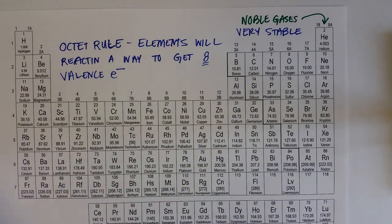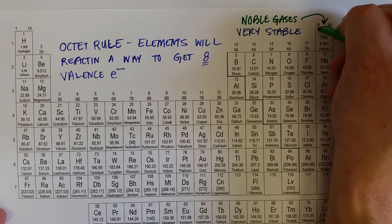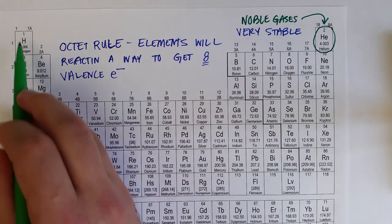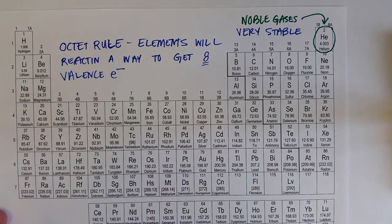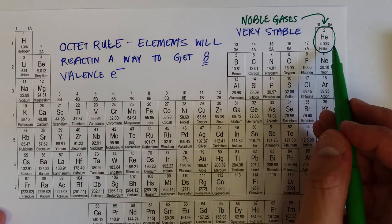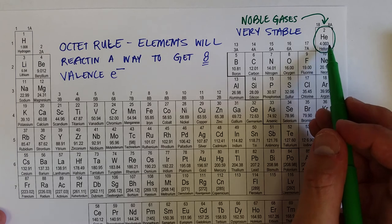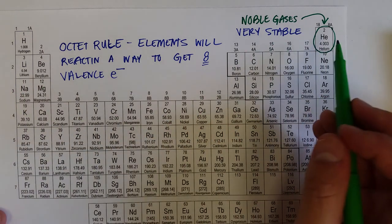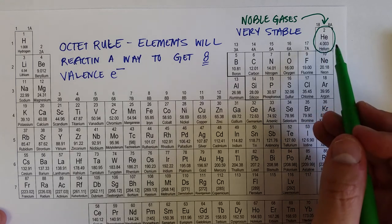We also call this, there's a subset to the octet rule, which I usually like to call the duet rule, that very small elements, like hydrogen, lithium, and beryllium, will be stable with an electron configuration just like helium. And so they'll tend to react so that they get to two valence electrons just like helium.